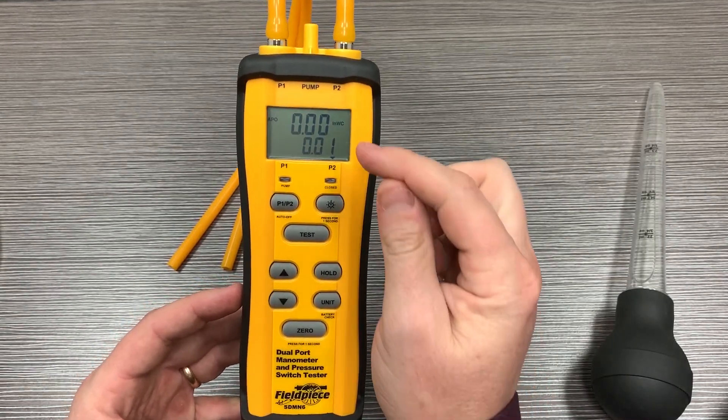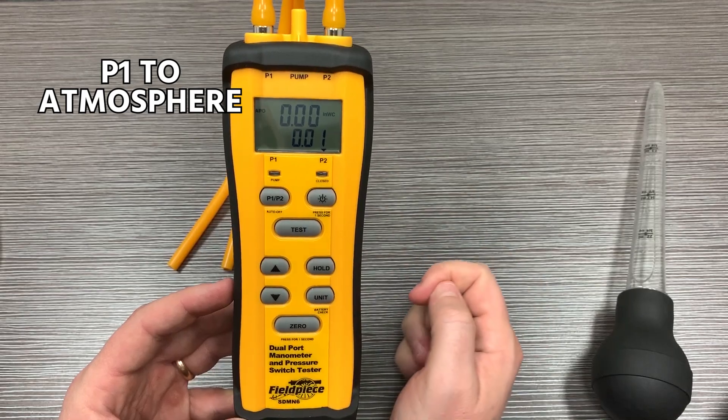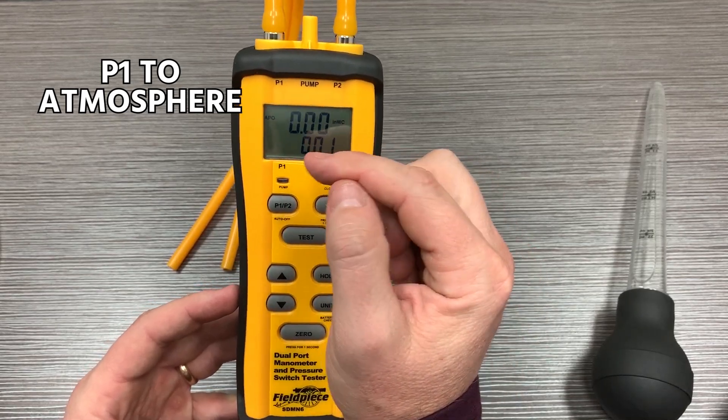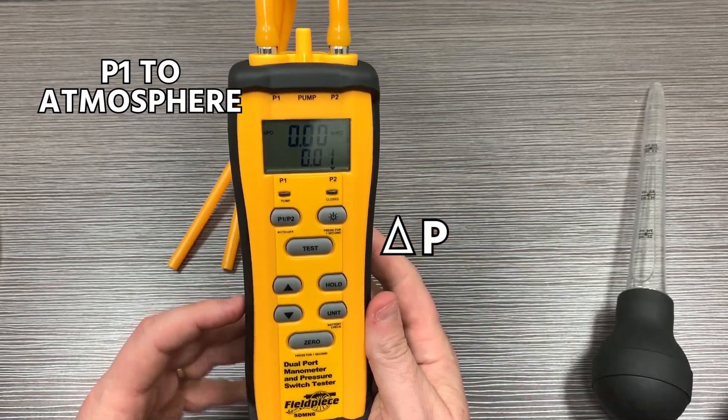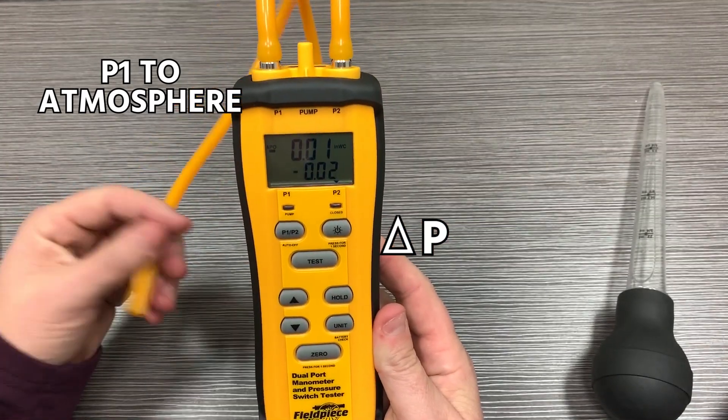Just again, don't get these two confused because they represent very different things. This represents whichever one you're at in reference to atmosphere, and then this other one is your delta P, or your difference in pressure between these two probes.